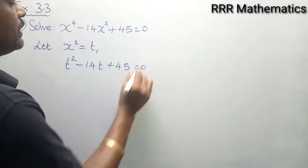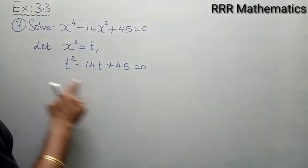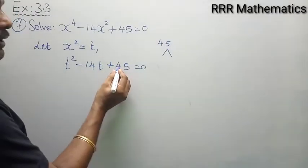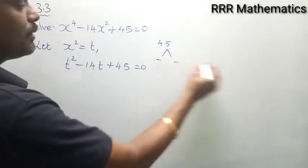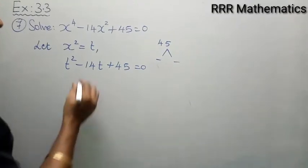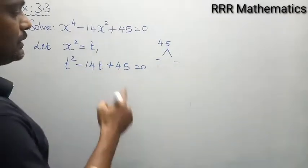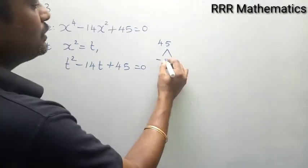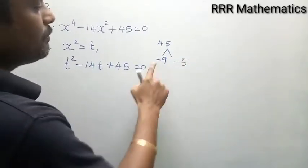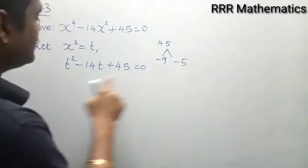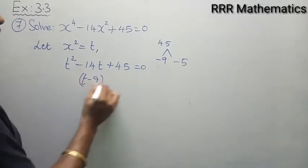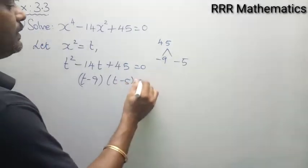Very simple. The product is positive and the sum is minus, so if the product is positive and sum is minus, both numbers will be negative. I have 14 to add, and 45. I know directly 9 × 5 = 45, so minus into minus is plus, 9 × 5 = 45, -9 - 5 gives -14. It gives (t - 9)(t - 5) = 0.